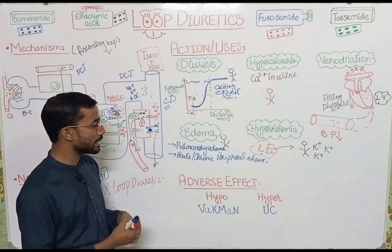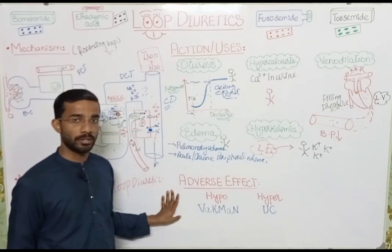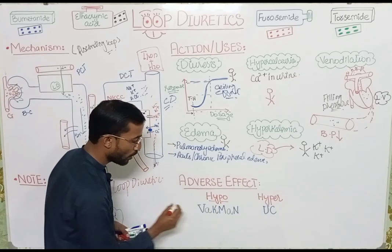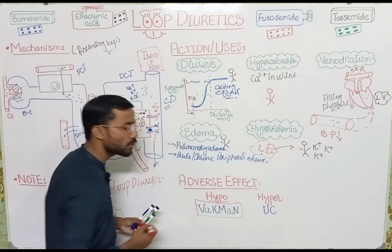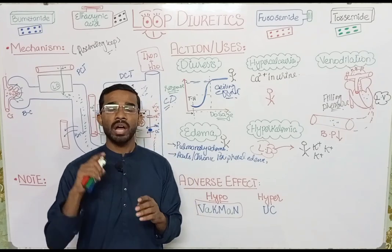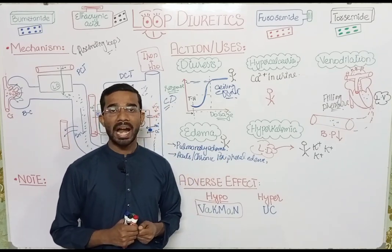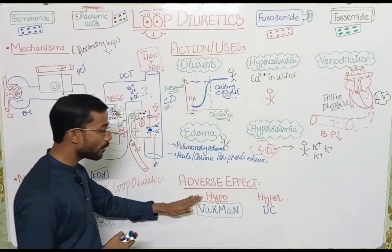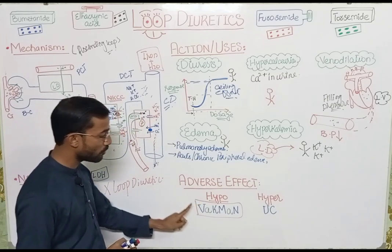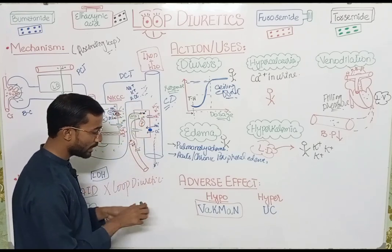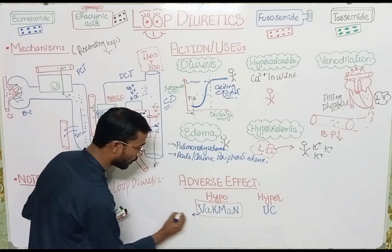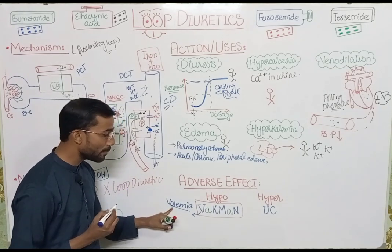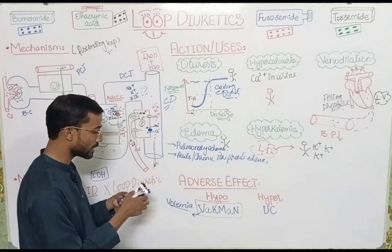Now let's discuss the adverse effects of loop diuretics. Similar to thiazide diuretics, the hypo conditions can be remembered by the mnemonic VECMAN. Pharmacology becomes easier when you have a strong grip on physiology and use mnemonics. First: hypovolemia — low volume of blood. Loop diuretics increase urine volume, so blood volume decreases automatically. This leads to hypotension and orthostatic hypotension, also called lightheadedness or postural hypotension — for example, when a person lying down suddenly stands up.